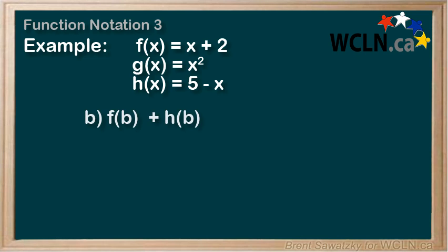b. What is f(b) + h(b)? So we're using two functions in this case, both f and h, and we're adding them. So f(b) + h(b) equals the function f plus the function h. And then we have to put b into each of them.